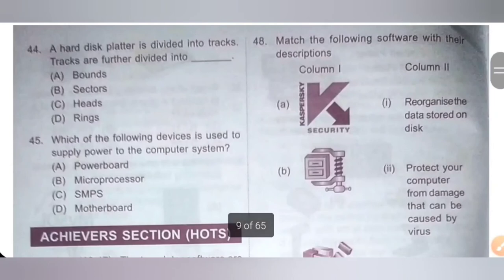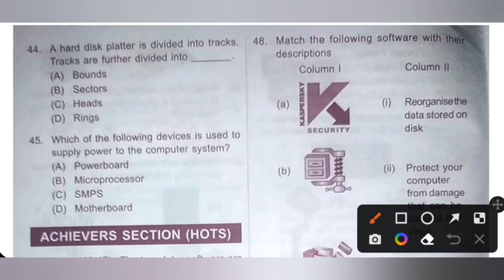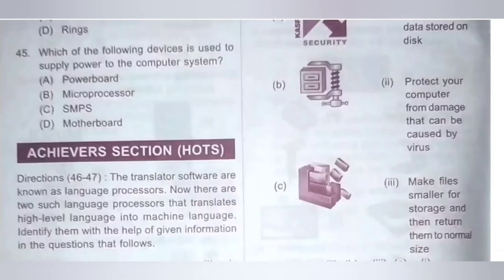Question 44: A hard disk platter is divided into tracks. Tracks are further divided into dash. Options: A. Bounds, B. Sectors, C. Hertz, D. Rings. Tracks are further divided into sectors. Option B is the correct answer.